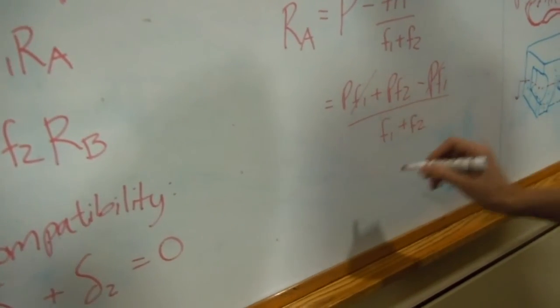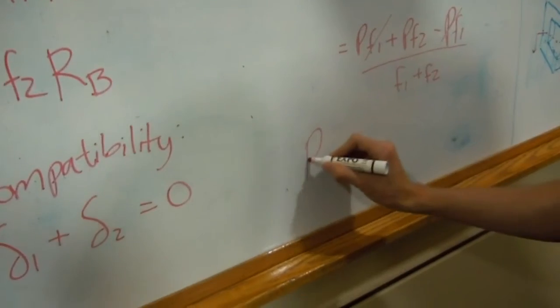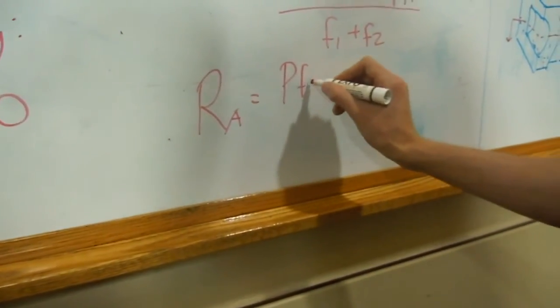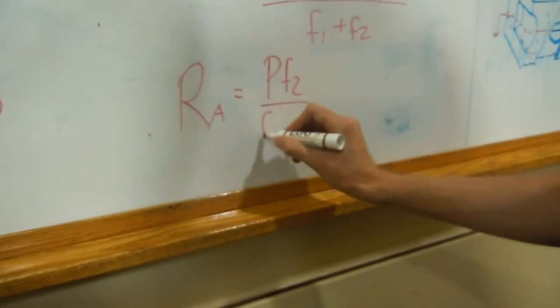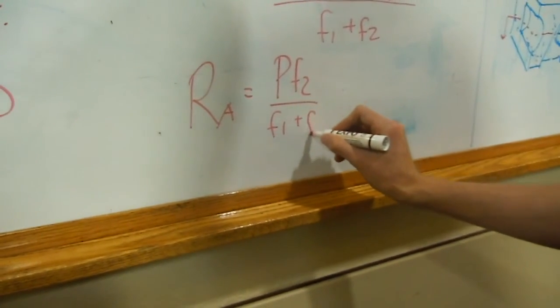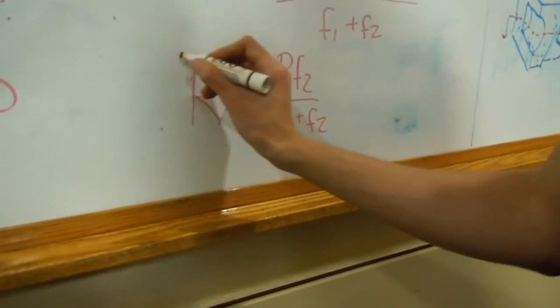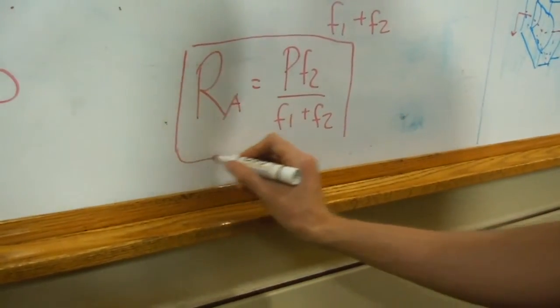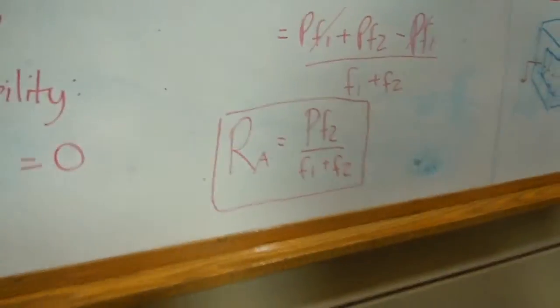And so Ra is equal to P F2 divided by F1 plus F2. That's how you solve it.